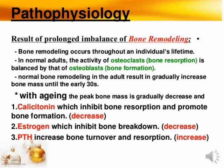Calcitonin, which inhibits bone resorption and promotes bone formation, is decreased. Then estrogen, which is responsible for inhibiting bone breakdown, is also altered. This leads to PTH — parathyroid hormone — increasing bone turnover and resorption. So increased bone turnover and resorption occurs due to alteration of calcitonin, estrogen, and PTH hormone.